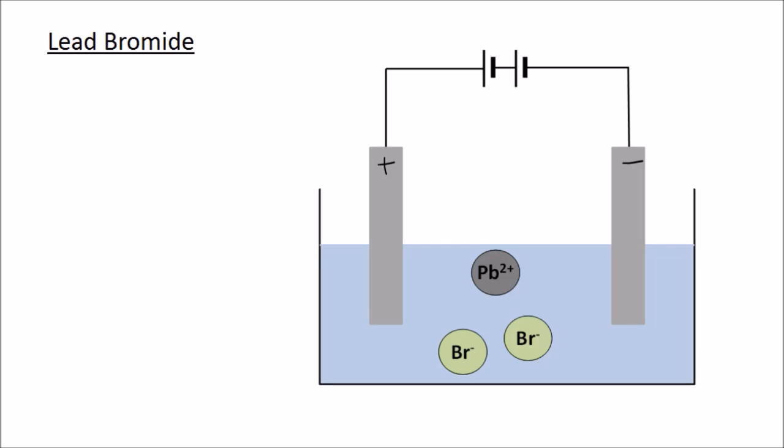Here's an example. Lead bromide is a solid and does not conduct electricity, but when you melt it, the ions can move freely and it can conduct. Our electrolyte is therefore molten lead bromide.